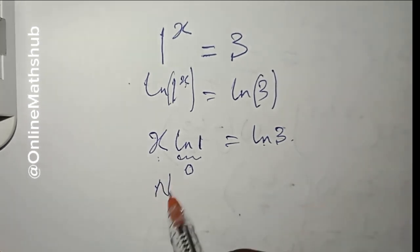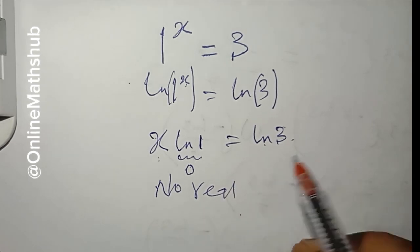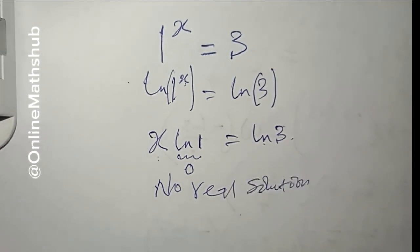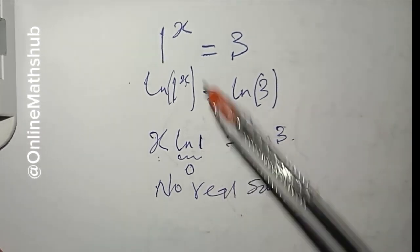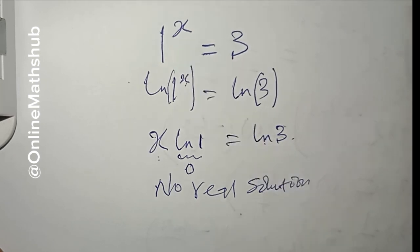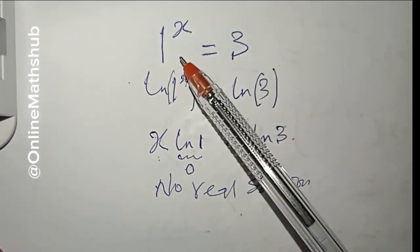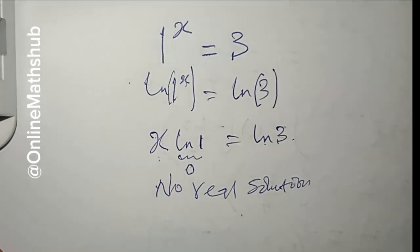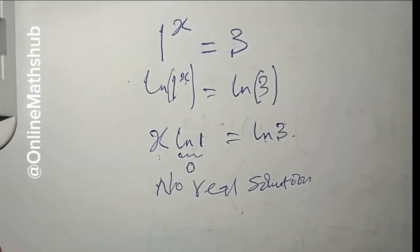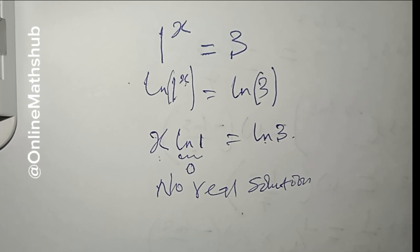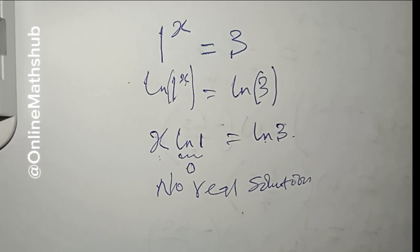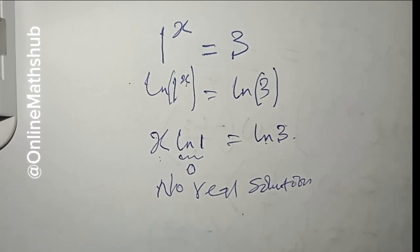Zero is not equal to ln(3), which shows that we cannot find a real solution to this equation. If you pick any real value of x, none of them will actually satisfy this. So we need to find a way to extend our solution to complex numbers — and that is when we can actually find a solution.